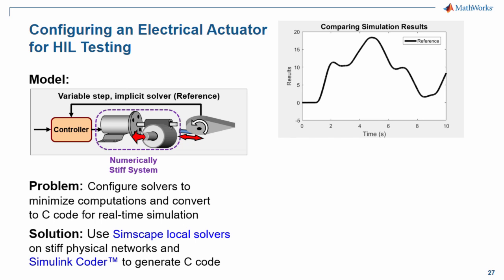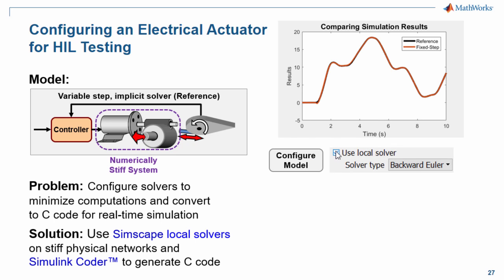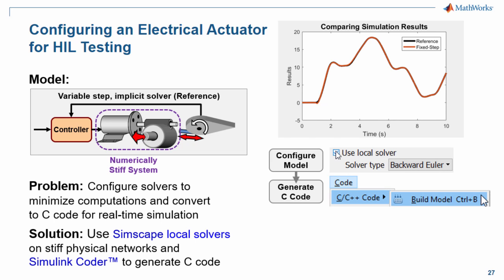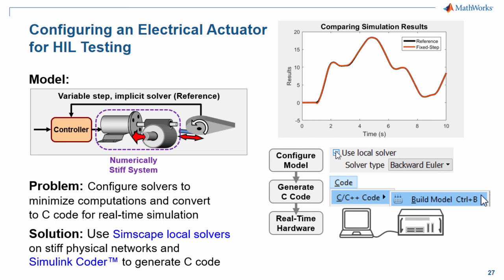Here are the steps that we will go through. First, we will configure our model to use a fixed-step fixed-cost solver appropriate for HIL testing. We will rerun the simulation on the desktop to ensure that we get comparable results. We will then convert this model to C code and download it to the real-time target. Once there, we will rerun the simulation to ensure that we get the same results and that it runs fast enough so that it doesn't generate any overruns. Finally, we will do our test — varying a parameter in the physical system and seeing how the control system reacts.